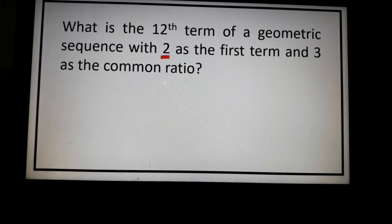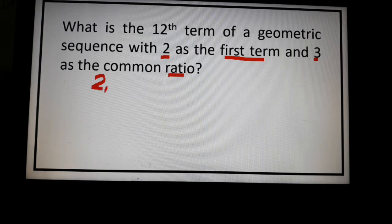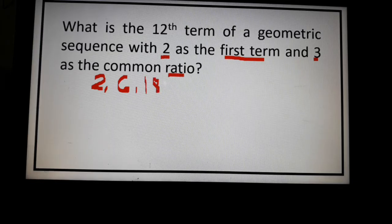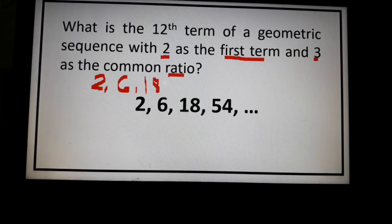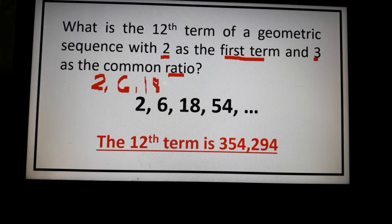So we are given 2 as our first term and then 3 is our r or the common ratio. So if you have a pen and paper, you start with 2. Multiply it by 3. 2 times 3 will give us 6. 6 times 3 will give us 18 and so on until you reach the 12th term. So it will take time. So I just gave the first 4 terms. If you'll do it manually or using a calculator, you'll know that the 12th term is 354,294.